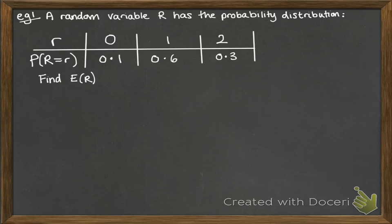So here is our first example. We've got a random variable r, and again, it can take any letter. We use the capital letter to represent the variable as a whole, and then a lowercase letter to represent each instance of the variable. So it has the following probability distribution. r can take the values of 0, 1, or 2 with the probabilities underneath them, and we want to find E of r, or the expectation of r. That means what value would we expect r to take on average.